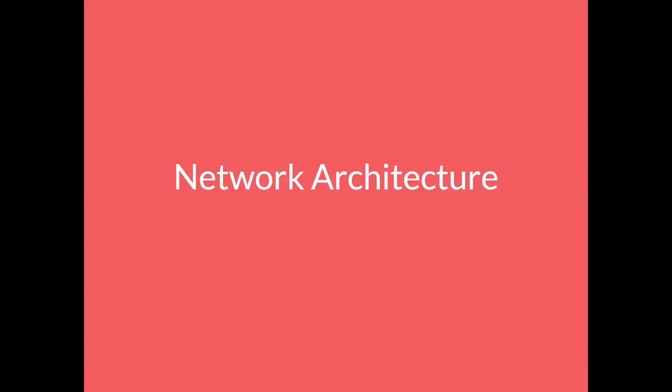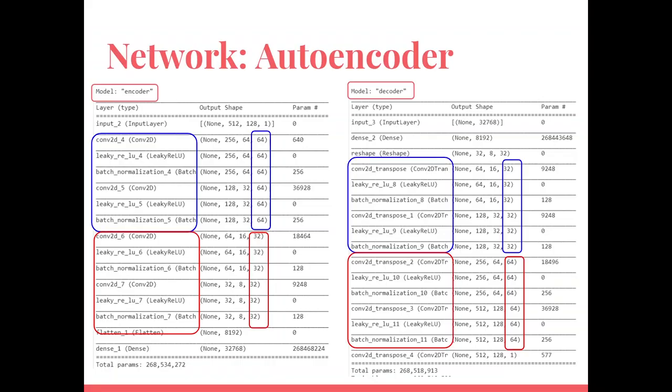And now Mario is going to explain you the network architecture and the results. Thanks Jaime. Now we are going to review the architecture of the neural network itself. Well, our neural network is composed by two symmetric parts, that are the encoder and the decoder, from the autoencoder architecture. Each part is symmetrical and is composed by two blocks, composed each block of another two convolutional blocks.